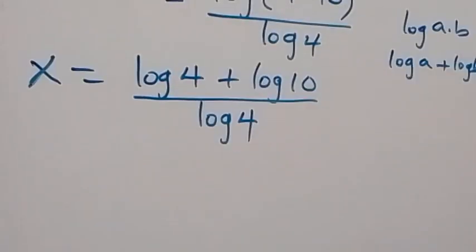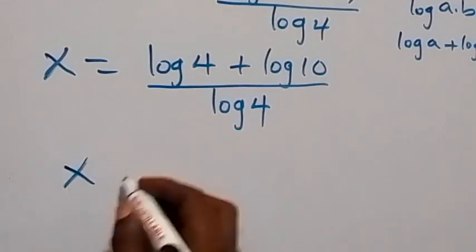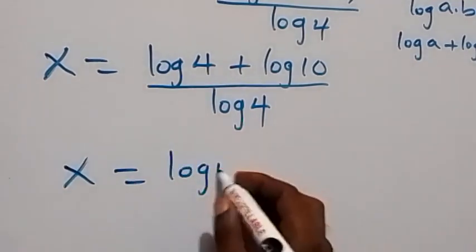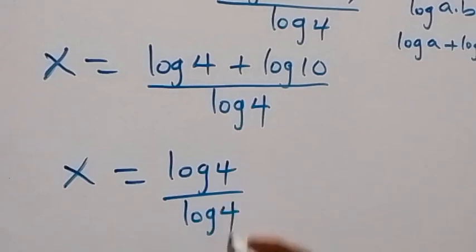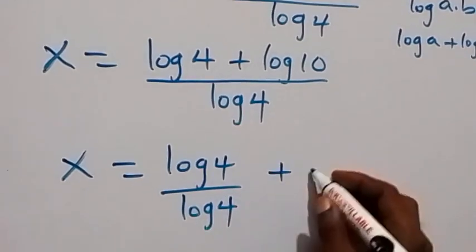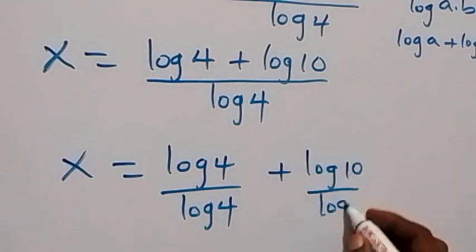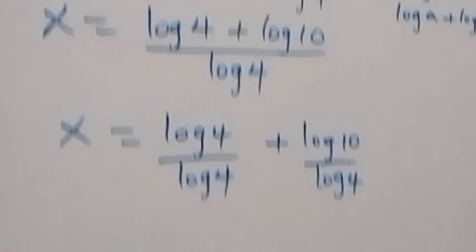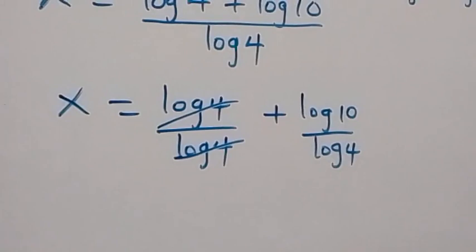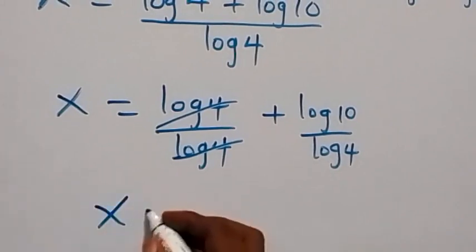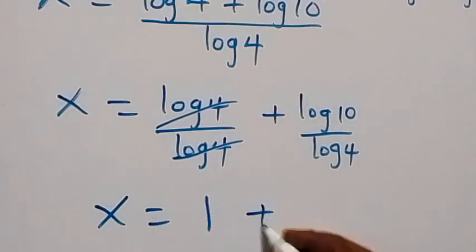Then we can separate this into two fractions. This will be x equals to log 4 divided by log 4, plus log 10 divided by log 4. This log 4 over log 4 cancels out, so we have x equals to 1 plus log 10 over log 4.